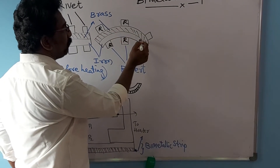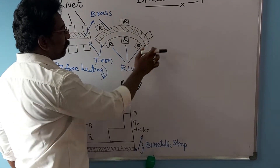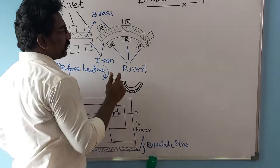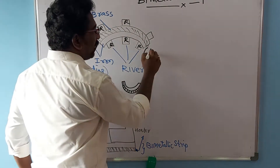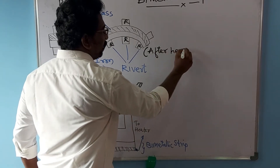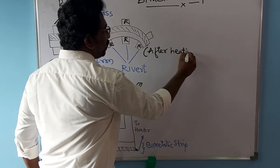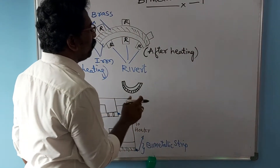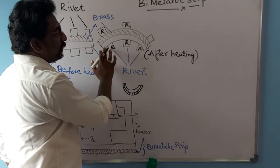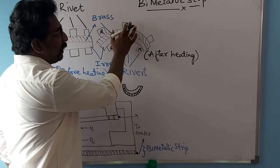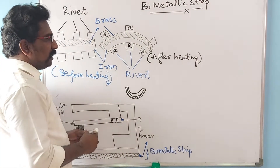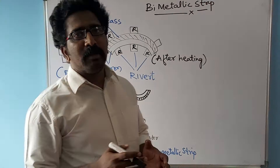So the bend takes place in the top part, and the entire bimetallic strip will appear bent upward once it has been subjected to temperature. This is after heating. Once this particular bimetallic strip is subjected to heat energy, the brass will expand in the upward direction, so the bend will be happening in the upward direction.